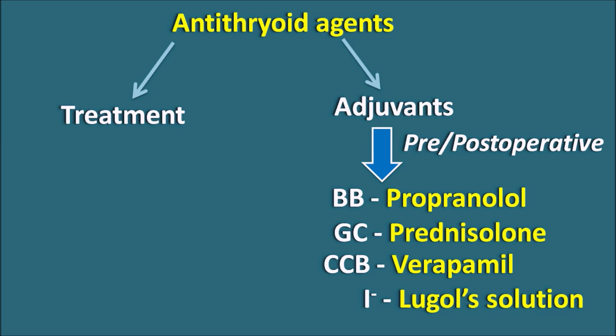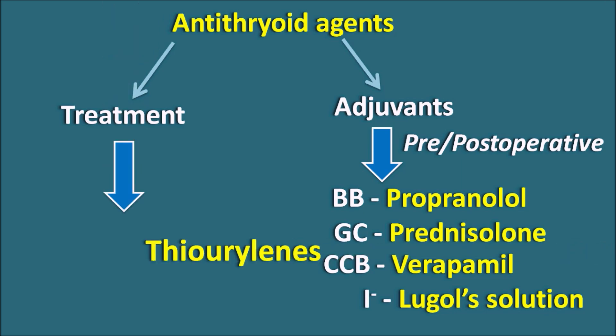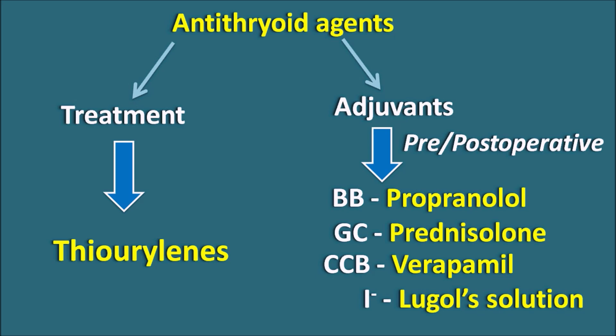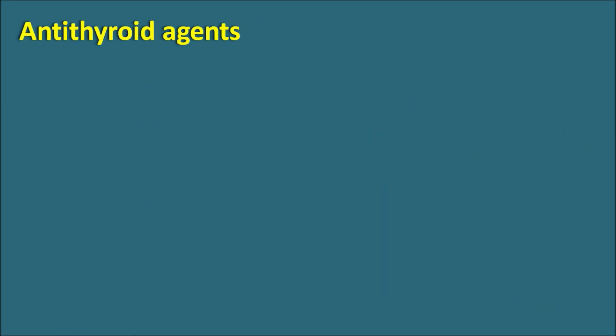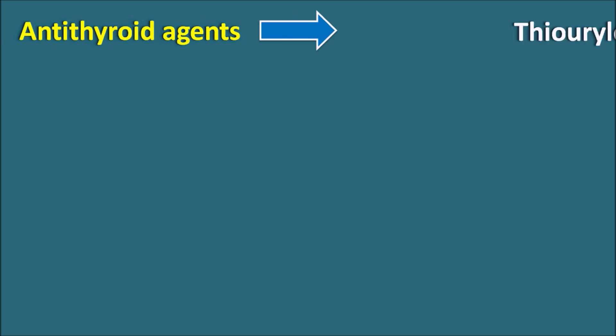What are the drugs used for the treatment of hyperthyroidism? The antithyroid agents mainly used for treatment are the thiourelians. These antithyroid agents are mainly used for treatment of hyperthyroidism and they are chemically classified as thiourelians.